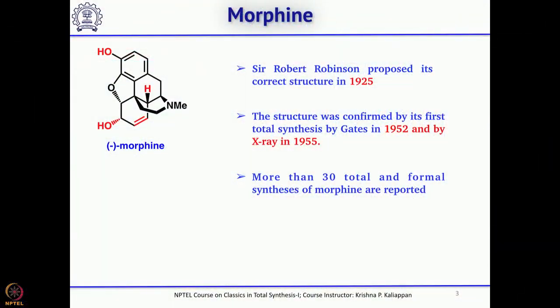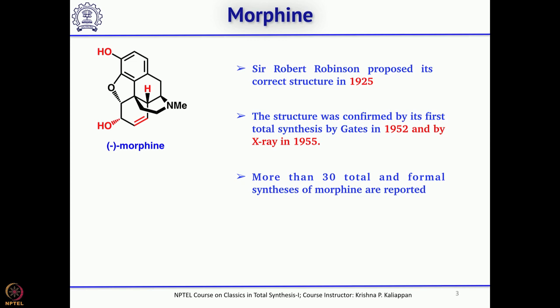In those days any new structure was isolated and then the correct structure was proposed by someone, but still the final proof came only in the form of total synthesis. The first total synthesis of this molecule was reported by Gates in 1952, and three years later X-ray also confirmed its structure. There are several total syntheses of this molecule — more than 30 total and formal syntheses are in the literature.